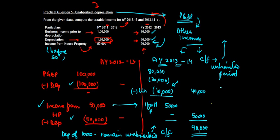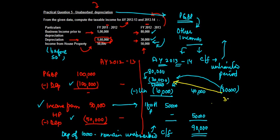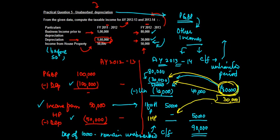Consider if the unabsorbed depreciation carried forward were eighty thousand instead of ten thousand. The law treats this unabsorbed depreciation as depreciation for the next year. In 2013-14, eighty thousand minus thirty thousand gives fifty thousand remaining, which would be fully adjusted, but we'd still have a balance of thirty thousand. Importantly, this thirty thousand can again be set off against income from house property, because the law treats it as current year depreciation, allowing it to be set off against any other income for that assessment year.